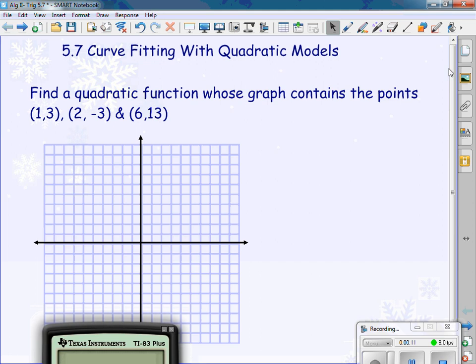We're going to find a quadratic function whose graph contains the point 1, 3, 2, negative 3, and 6, 13. I want you to write this down, and then just make a basic graph in your notes and plot those three points.